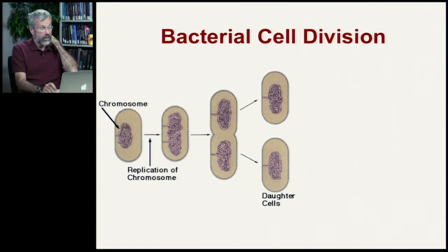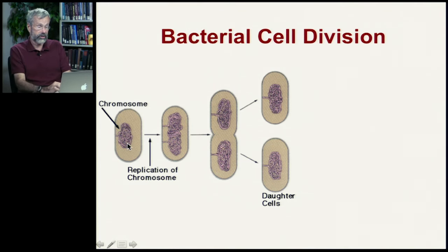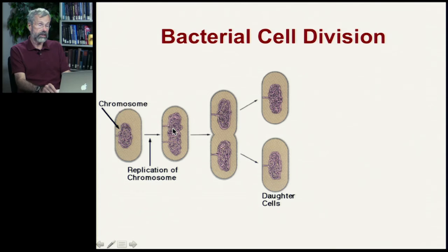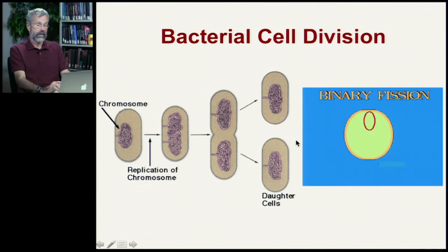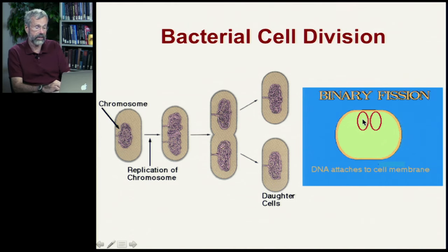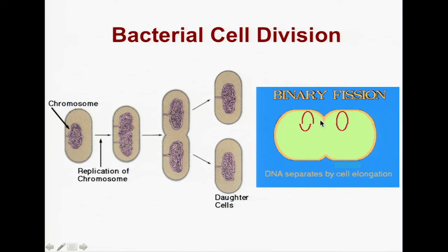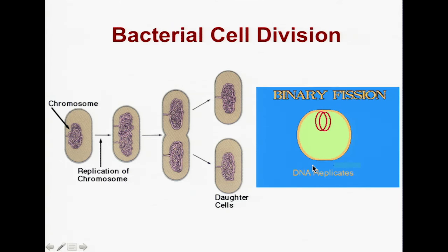Bacteria are unicellular organisms — they are not diploid; they just have a single circular chromosome. They undergo DNA replication just like everything else. At the end of DNA replication, there are two identical double strands of DNA — duplicate chromosomes. The cell grows and buds off, resulting in two identical daughter cells. This process is called binary fission: the DNA replicates, the cell elongates and eventually separates into two daughter cells from one original.